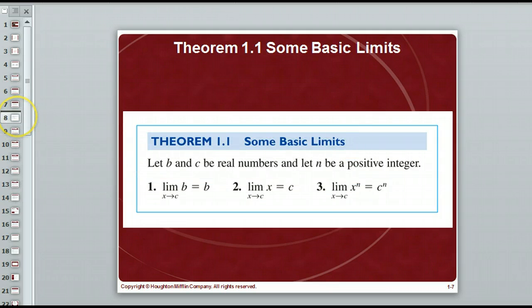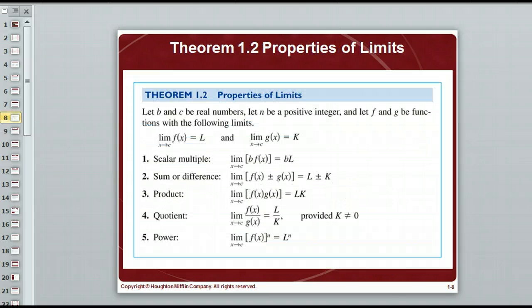This next one, scalar multiple. That just means that if I have b times some function, and the limit as x approaches c of f(x) is equal to L, I'm just going to take that scalar, which is the b, and multiply it by L. This is really direct substitution. This one's direct substitution too. If I have the sum of two polynomials, or two functions, I can take c and plug it in, and I get the two limits out. Product, same. Quotient, same, provided k does not equal zero.